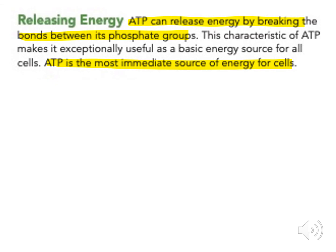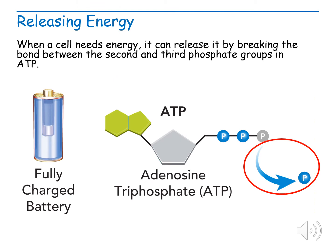ATP is the most immediate source of energy for cells. When a cell needs energy, it can release it by breaking the bond between the second and third phosphate groups in ATP.